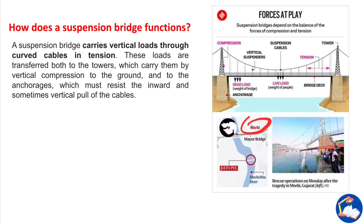Looking at the location, Morbi is a district and the bridge is situated over the Machu River. This is the Jhultopul suspension bridge that collapsed.